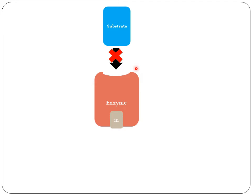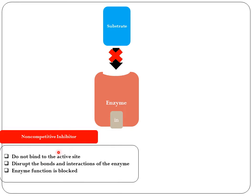It is called non-competitive because regardless of the concentration of the substrate or the inhibitor, the enzyme will be affected even if just one molecule of inhibitor binds to its site. In general, there is no binding to the active site — binding occurs at a different zone. When the inhibitor does that, it disrupts the bonds and interactions of the enzyme, altering its shape so the substrate has no accessibility to the active site.